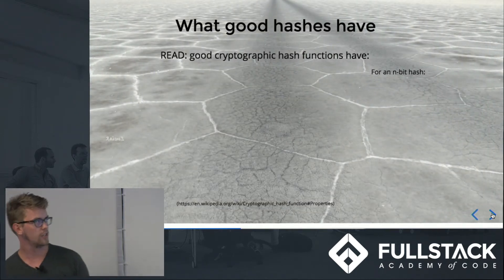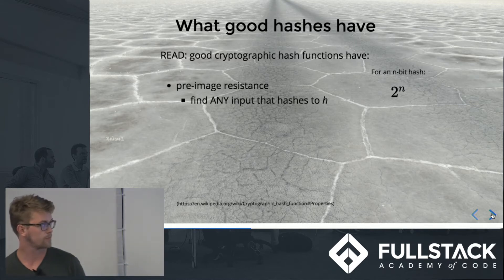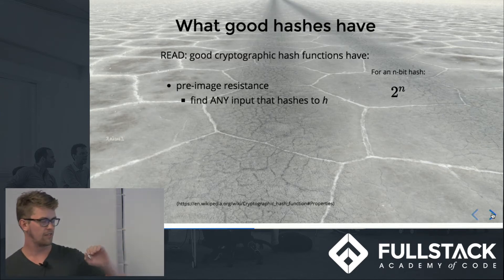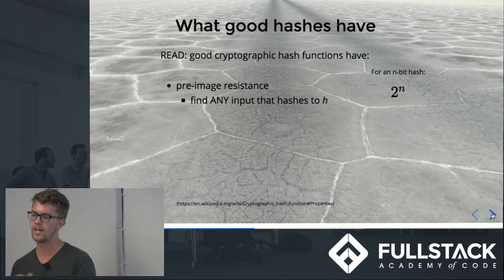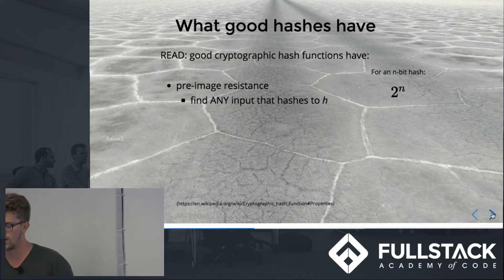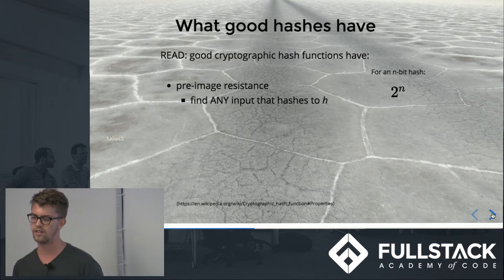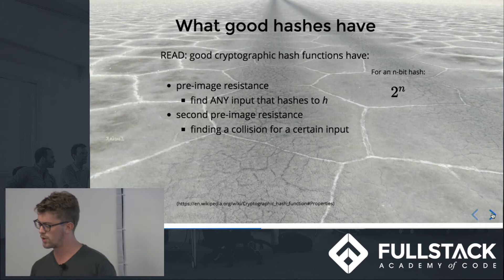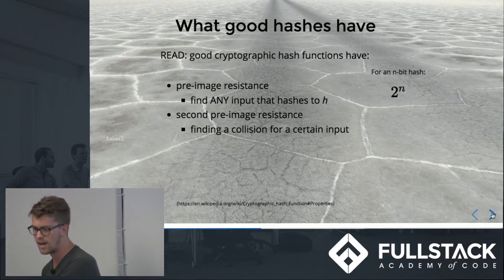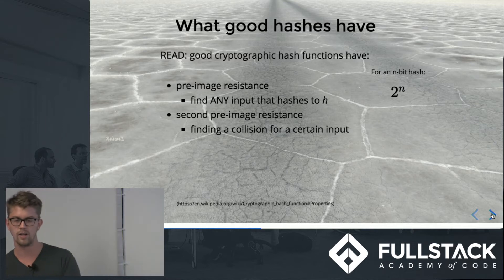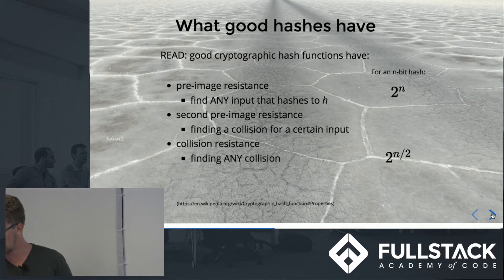Good cryptographic hash functions need pre-image resistance — it should be difficult to find any input that hashes to a particular hash. If my password hashes to 'xxy123,' I shouldn't be able to find any other input that also hashes to 'xxy123,' because if I can generate that hash the game is over. There's also second pre-image resistance: given a known input and its hash, I should not be able to find another input that hits the same hash.